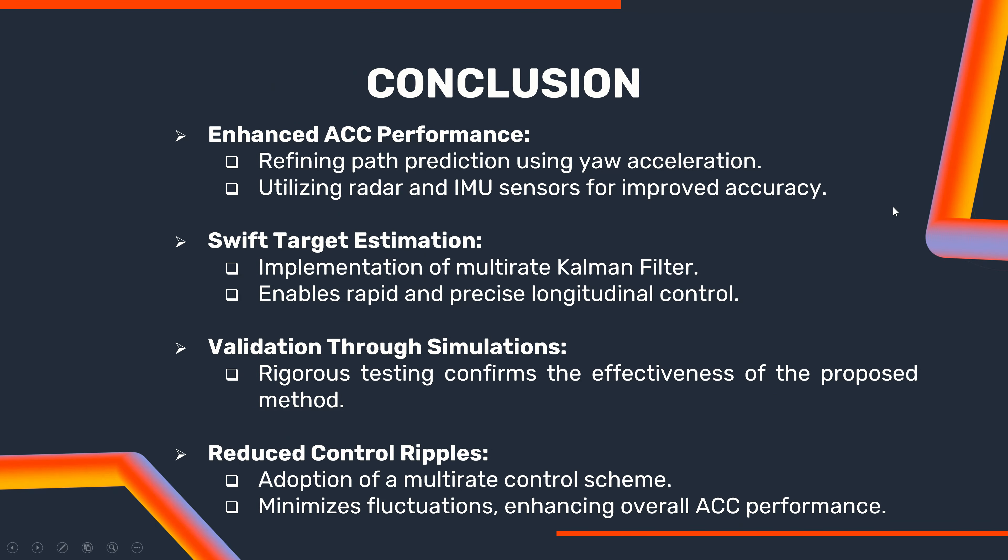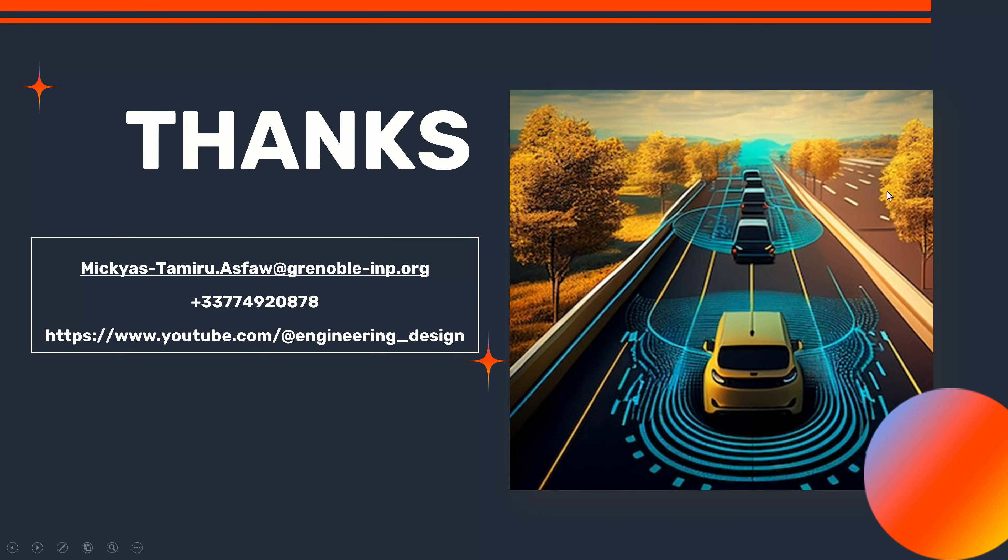In summary, the proposed method enhances adaptive cruise control by refining path prediction with yaw acceleration. By leveraging radar and IMU sensors, the multi-rate Kalman filter ensures good target estimation, enabling rapid longitudinal control. Validated through simulation, the new approach minimizes control ripple, enhancing the overall ACC performance. Thank you.